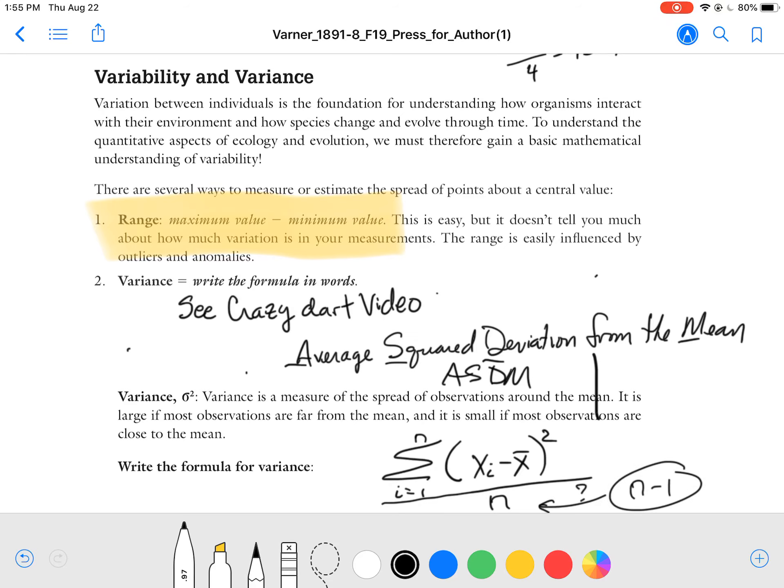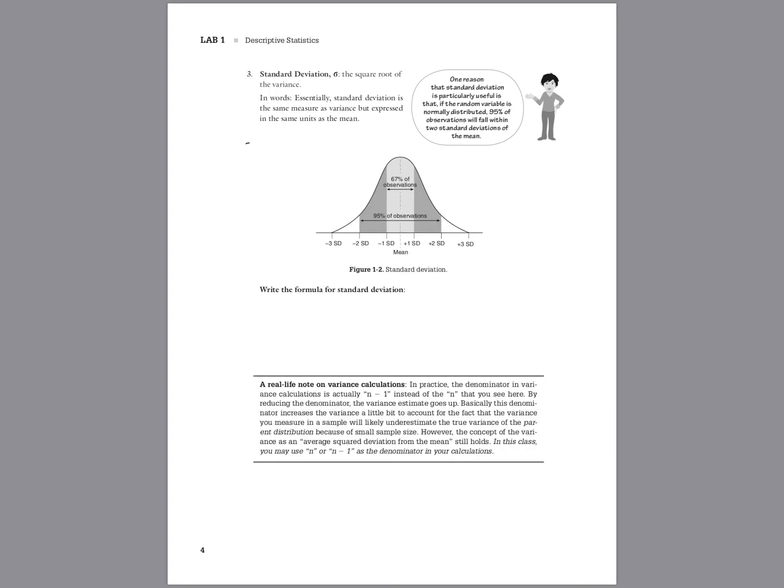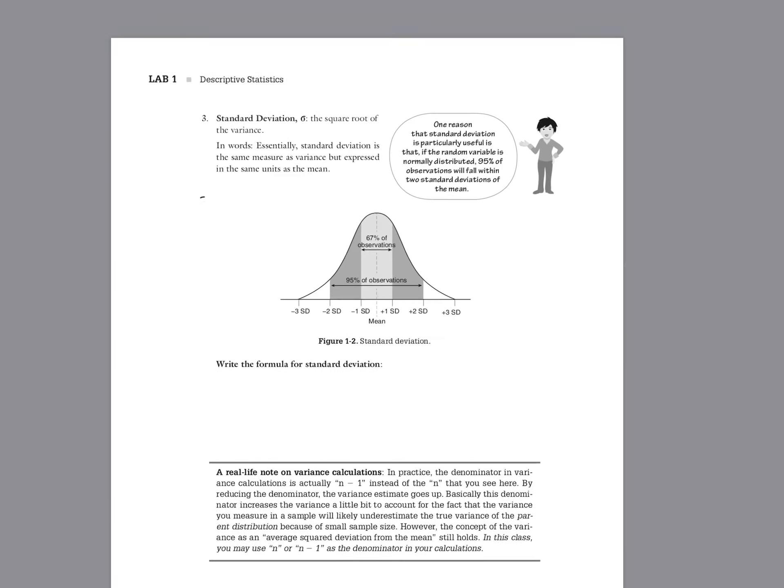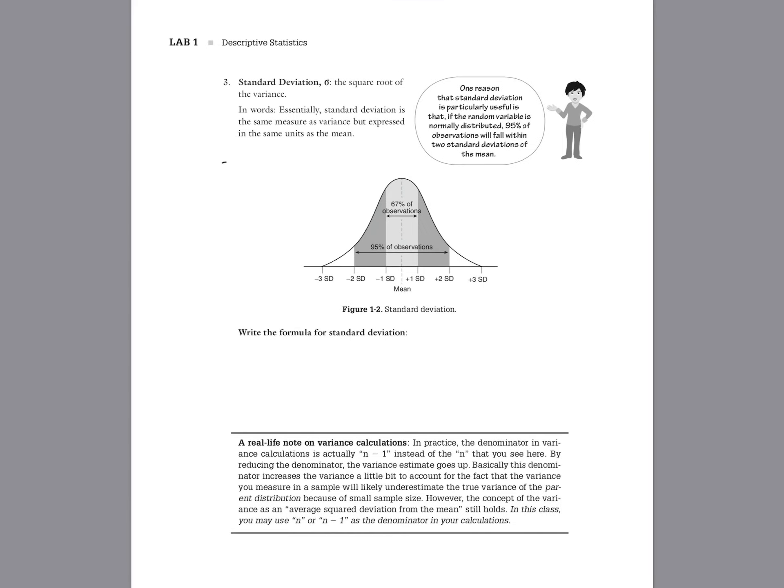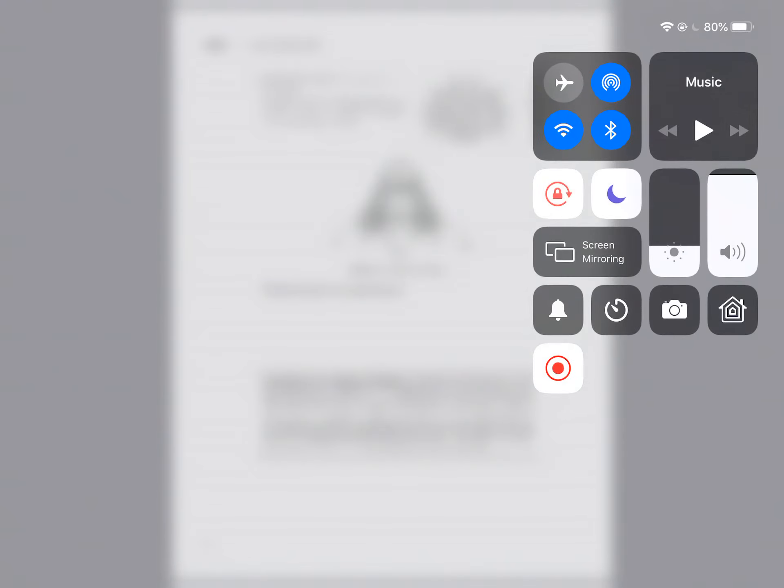You can do that because when you're calculating the variance of a sample, you're really trying to estimate the parent distribution. And this little number here is the number that corrects your variance so that it's an unbiased estimate of the parent distribution variance, not of the variance of your particular sample. So that's nice to know. But in this class, you can use n or n minus one, and that would be fine. Oh, here on the next page, we're going to move on to standard deviation. And I'm just going to put a hold. We'll stop this talk right there. And you guys should watch the crazy dart game.